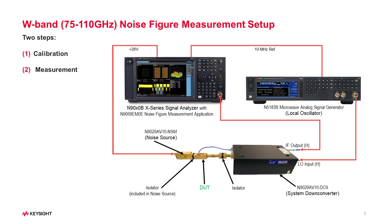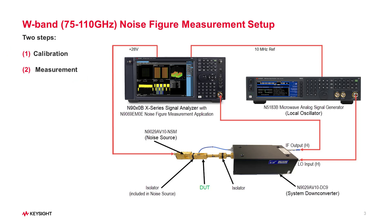The complete noise figure measurement has two steps: Step 1, calibration, and Step 2, measurement. The operation is automatically controlled and performed by the N9069 EM0E noise figure measurement application.